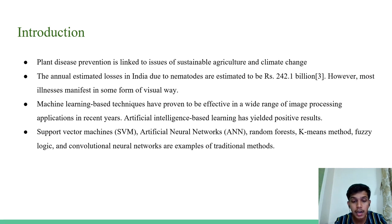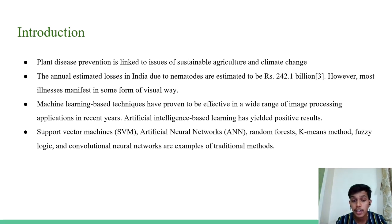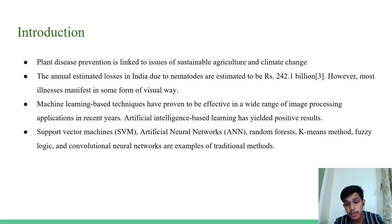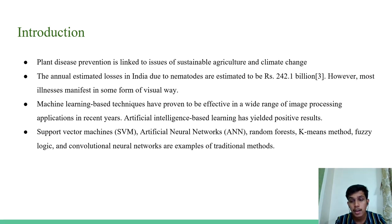The estimated crop cost was 4236.51 billion with a disease loss of 16.5% across all crops affected. The annual estimated losses in India due to nematodes are estimated to be Rs. 242.1 billion. Most illnesses manifest in some form of visual symptoms. The primary method for identifying plant disease in practice is a qualified expert's naked eye examination. But many machine learning techniques have proven effective in image processing applications in recent years. Support vector machines, artificial neural networks, random forest, k-means method, fuzzy logic, and convolutional neural networks are examples of traditional methods. Our system has achieved an accuracy of more than 90%.